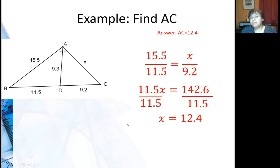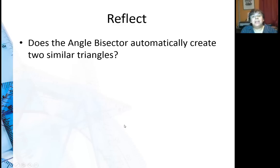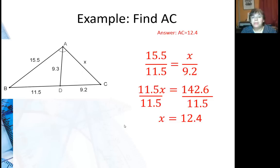So it's a very simple theorem to apply, it's a little bit more complicated to prove. So in reflection, does the angle bisector automatically create two similar triangles? Now let's go back and look at that.